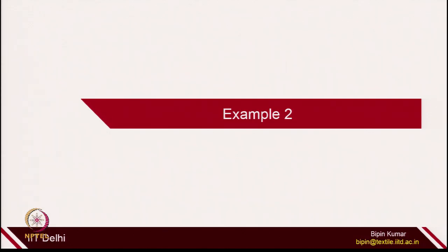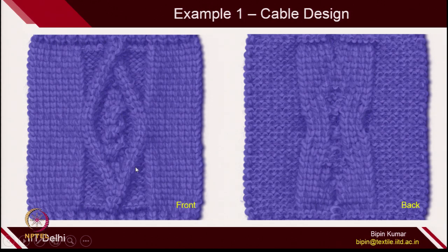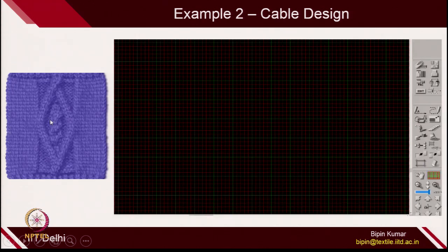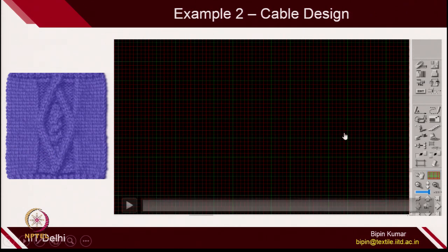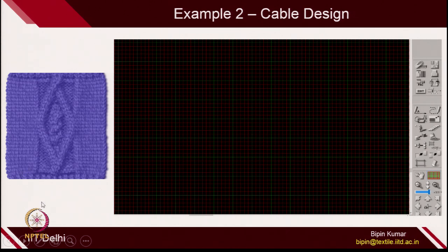Let's move to another example, a little more complicated — I'll just show you the demonstration. Let's say I want to make a cable and Aran design. You can see two cables happening from the outer side, also changing direction, and from the inner side as well. On the back side, it looks different. So how do we actually make this cable? It depends on your understanding of knitting — which two needles you want to switch, swap, or how you want to change the directions.